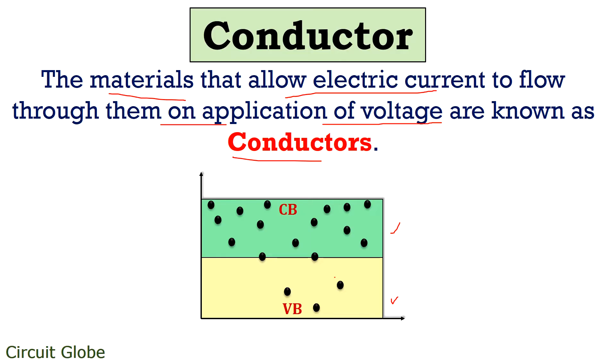When some external potential is provided to the material, then even at low temperature the charged carriers move from valence band to conduction band, resulting in flow of current.